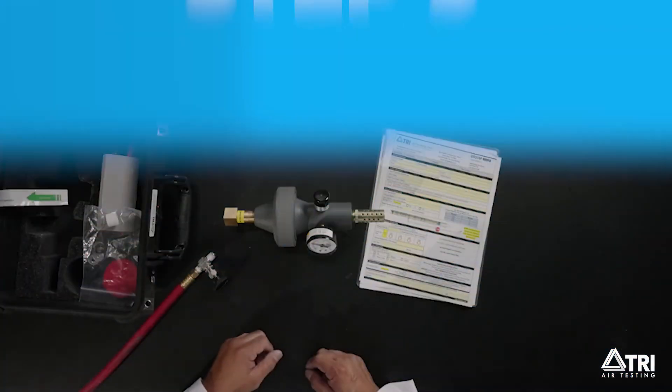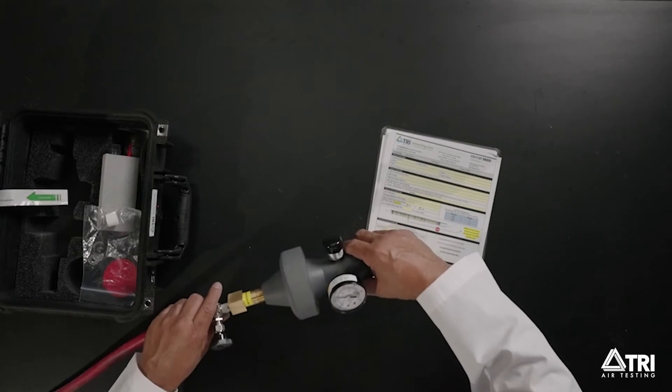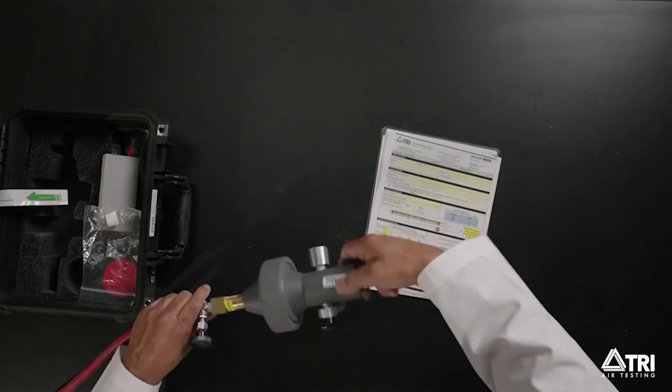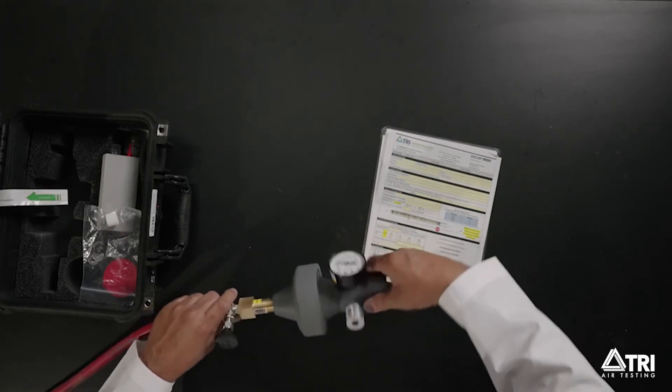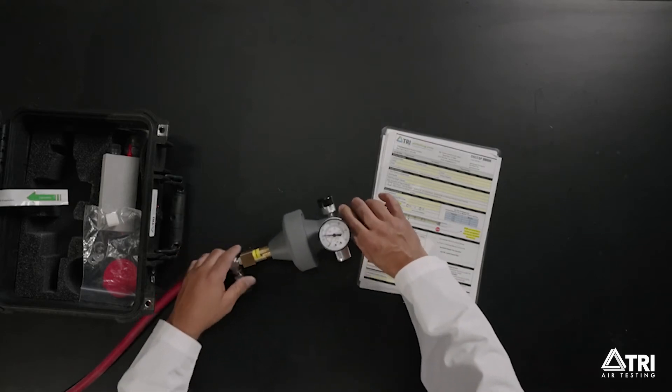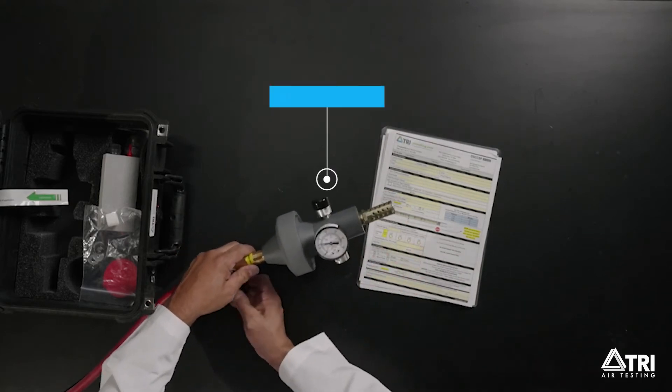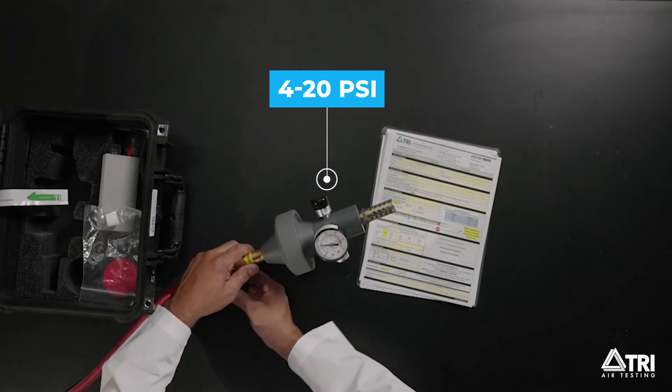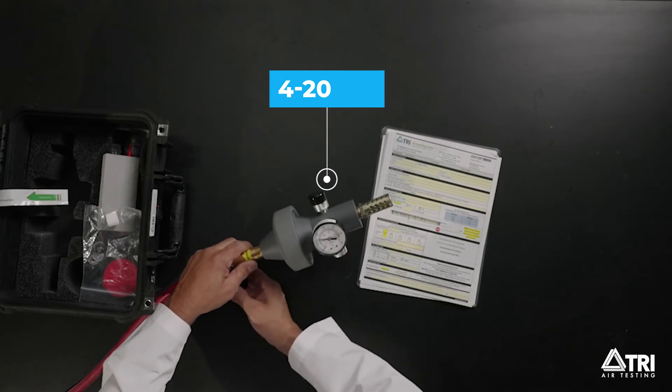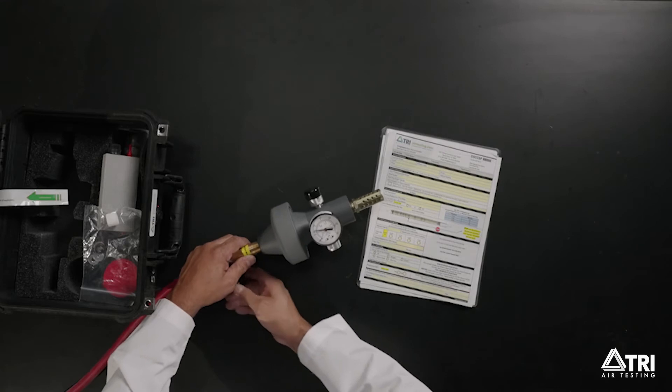Step 3. Connect the complete unit to your gas source. Open the gas source slowly and allow the pressure on the PVC flow section gauge to stabilize between 4 and 20 psi. You can adjust the psi with an inline valve to achieve the pressure. Do not allow the gauge to exceed 30 psi.